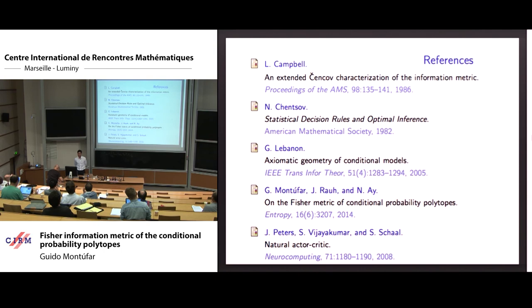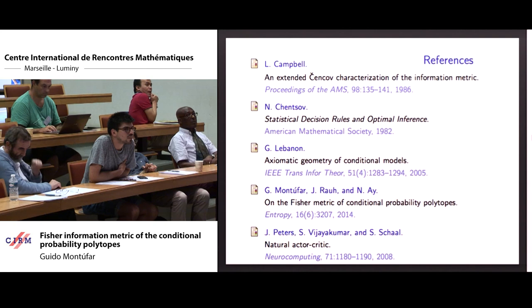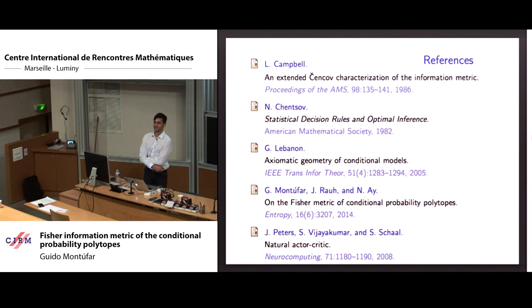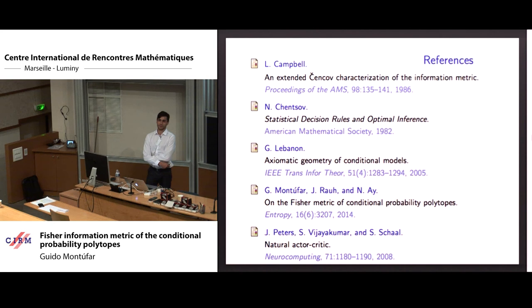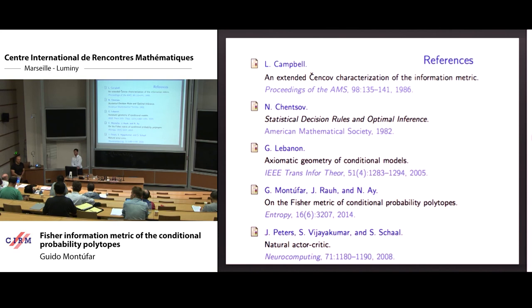Are there further questions? That's Jan Peters — he's well known for his work in robotics and has done a lot in the context of the natural policy gradient. Jonas Peters is in Denmark and works on causal inference, which was the topic of Tobias' talk. Thank you very much.